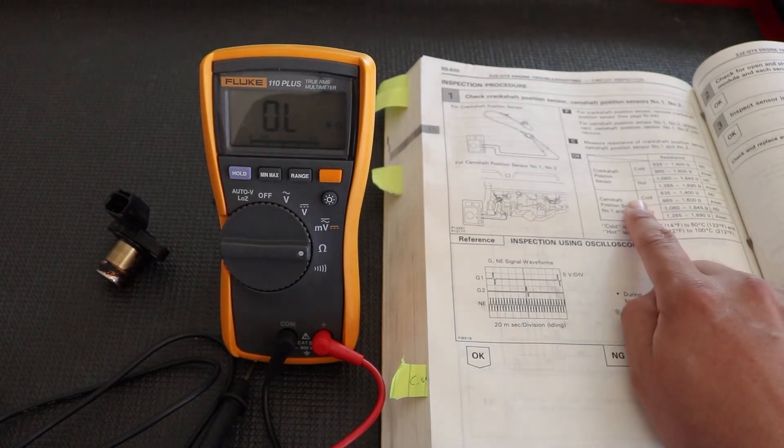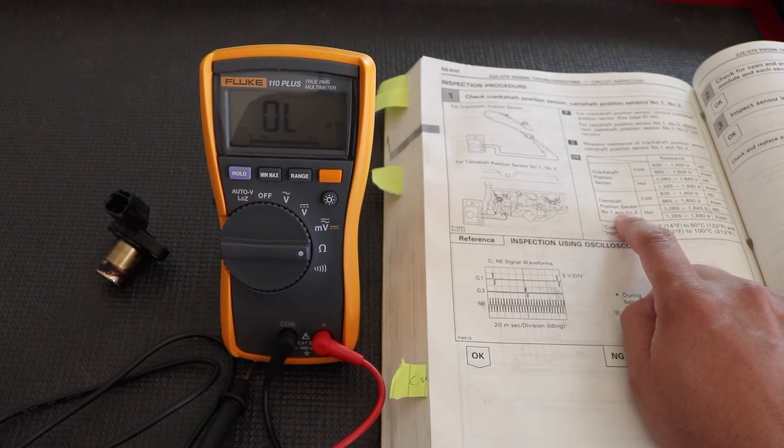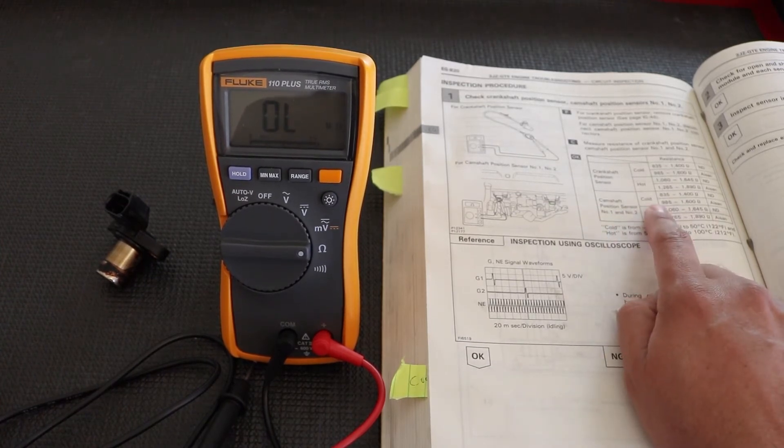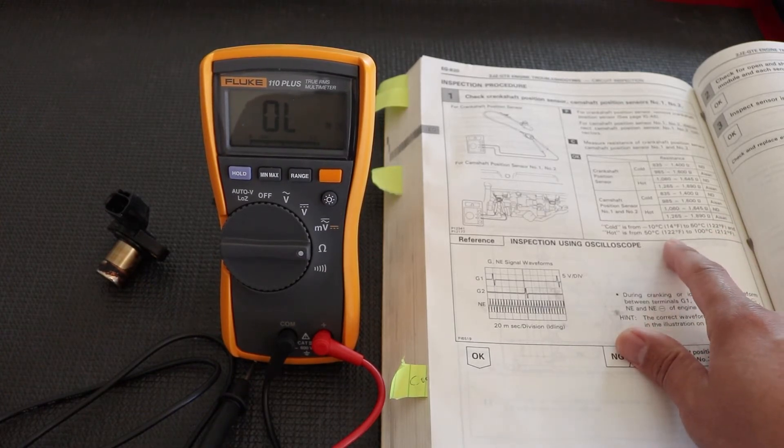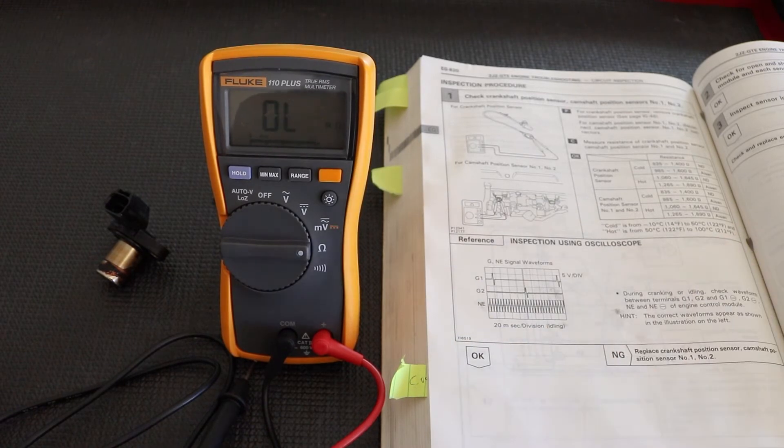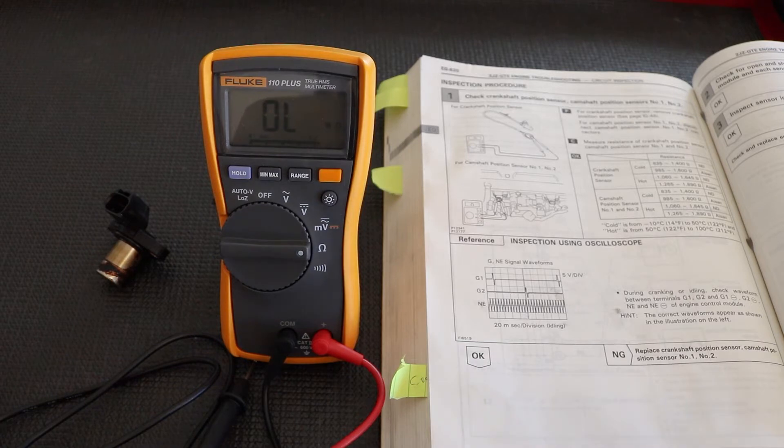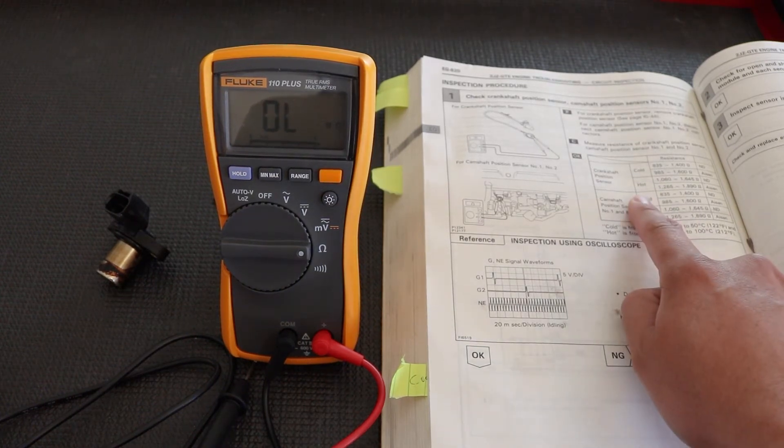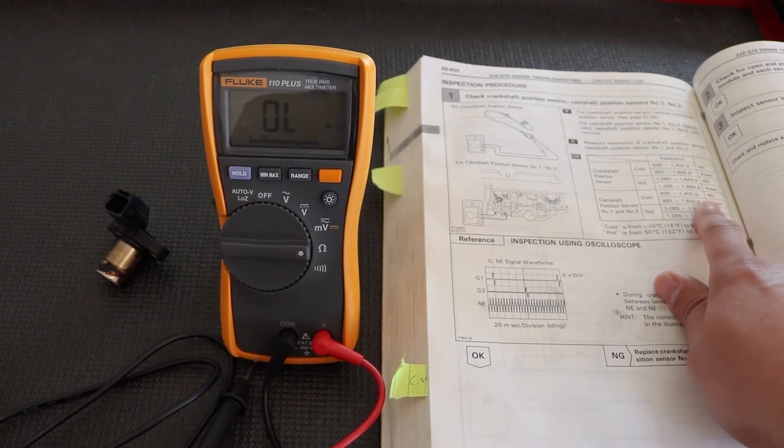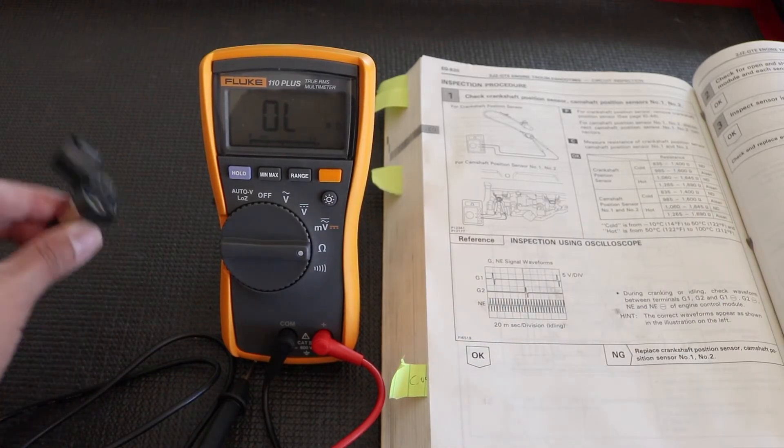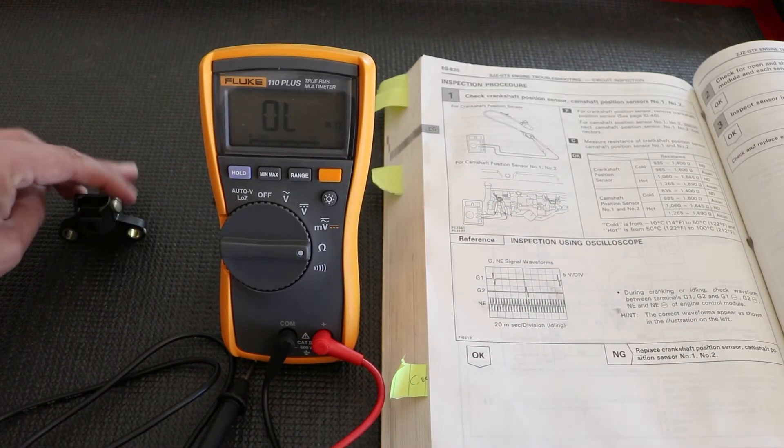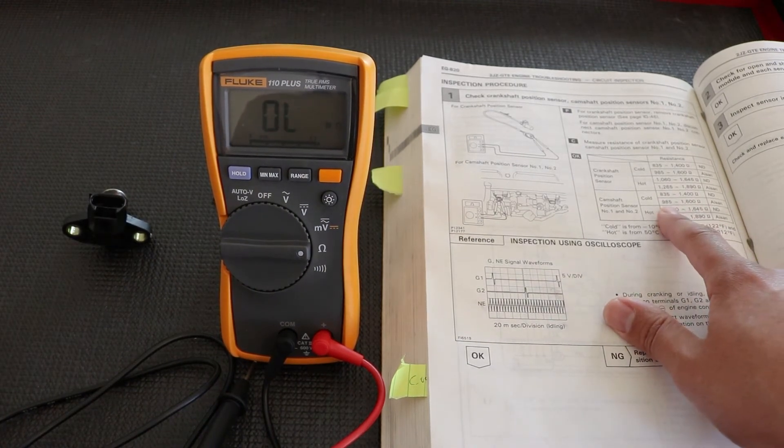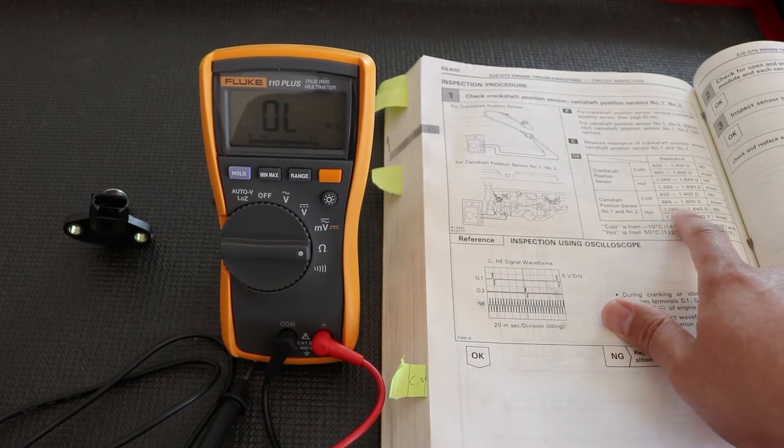So going back to our service manual here, we have the camshaft position sensor resistance chart here. And it's interesting because we have a cold and a hot. Now it also has cold is from 14 degrees Fahrenheit to 122 degrees Fahrenheit. And hot is from 122 degrees Fahrenheit to 212 degrees Fahrenheit. So already whenever you're diagnosing or troubleshooting or testing something, as you can see in this advanced video here, there's a lot more requirements that you have to meet before you just go and probe something or put your leads on something. So we know it's cold, but then we also have another branch off here and it says ND or Asian. And I believe that is the brand. So when we look at our camshaft position sensor, I do see here that it is the Asian. I'm sorry if I mispronounced that. So we know what that is. So we know that it's cold and we know the brand of it.